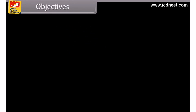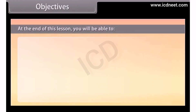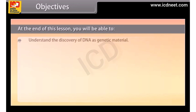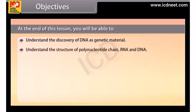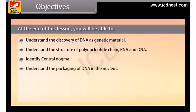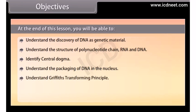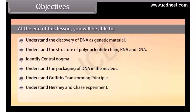Objectives. At the end of this lesson you will be able to: understand the discovery of DNA as genetic material; understand the structure of polynucleotide chain, RNA and DNA; identify the central dogma; understand the packaging of DNA in the nucleus; understand Griffith's transforming principle; understand Hershey and Chase experiment; and identify the differences between DNA and RNA.